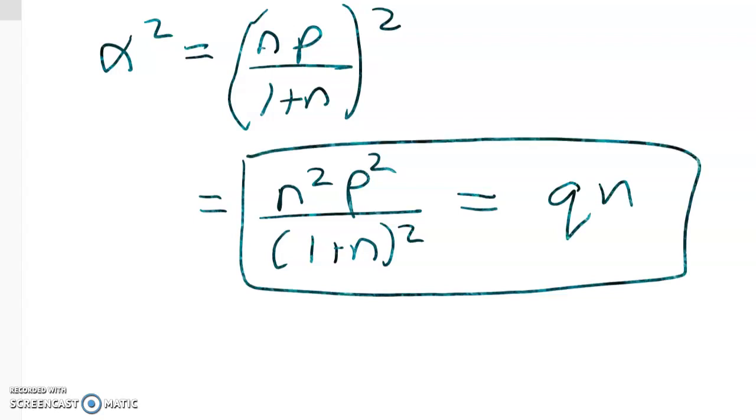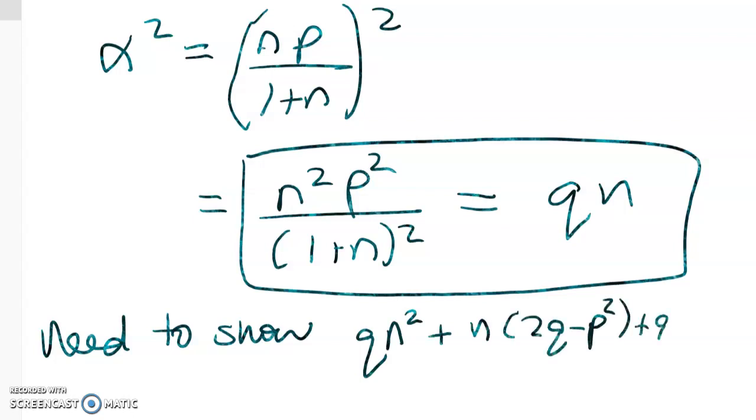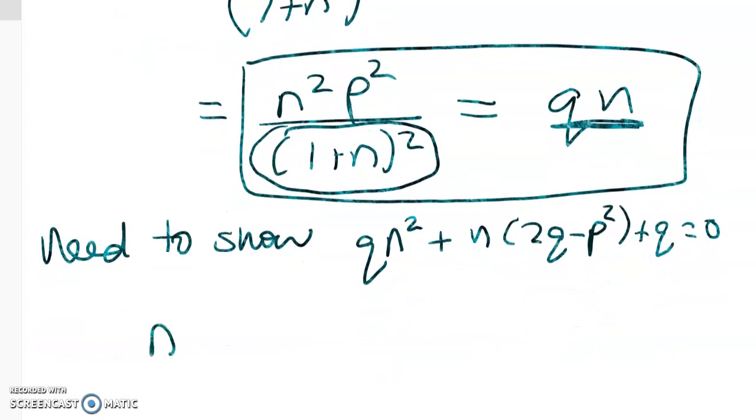And now we're just about there. So let's just write out what we need to find. So we need to show that qn squared plus n times 2q minus p squared plus q is equal to 0. So I can see a q sitting here. I'm going to multiply both sides by this so that I don't have a fraction and just see what happens.